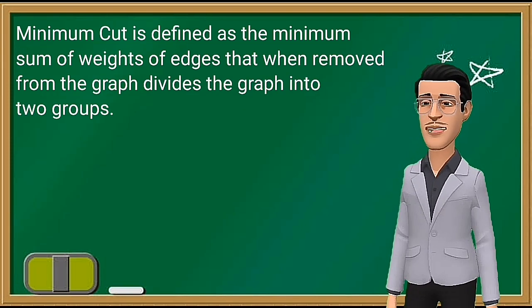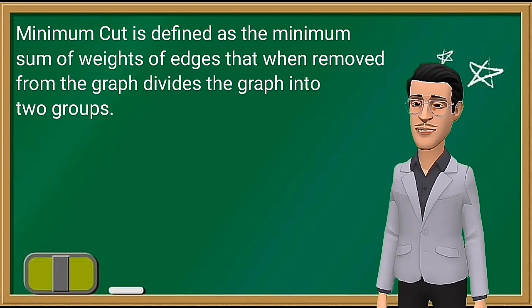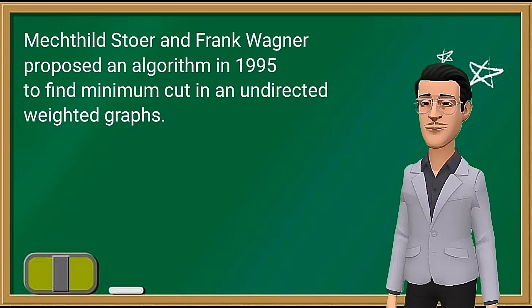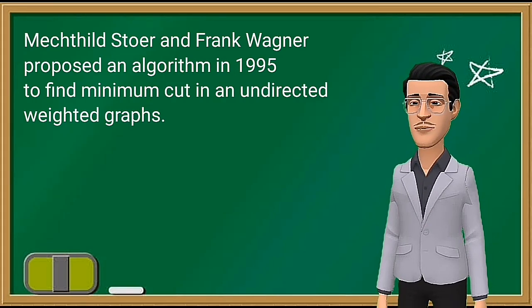At least one edge that when removed from the graph divides the graph into two groups. Mikkel Thorup and Karger proposed an algorithm in 1995 to find minimum cut in an undirected weighted graph.